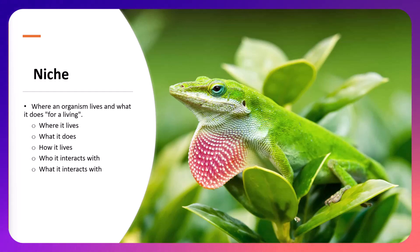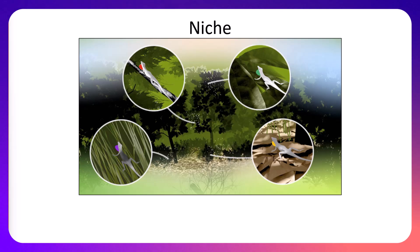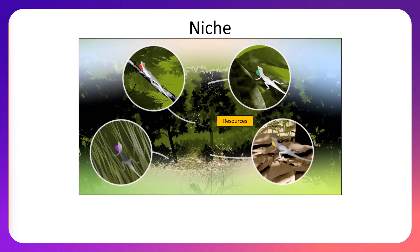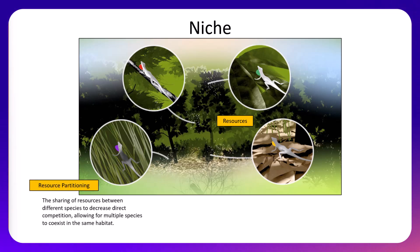Looking at a specific example — these are anole lizards in a tree full of resources: food, space to live, space to reproduce and find shelter. There would be competition for those resources, so if they need to decrease competition, they'll seek locations within the tree with less competition or an abundance of food not utilized by another organism. We refer to that as resource partitioning — the sharing of a resource to decrease direct competition.